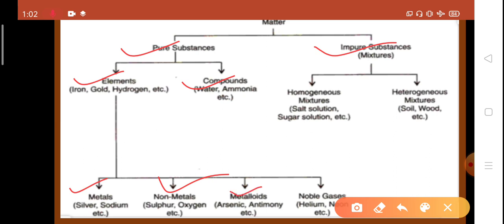Next, metalloids, these are special group of elements, which shares some properties of metals and some properties of non-metals, example, arsenic, antimony, etc.